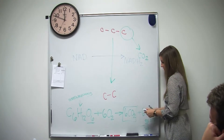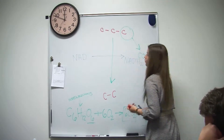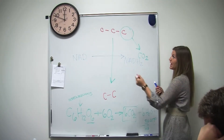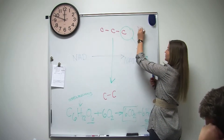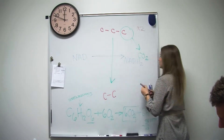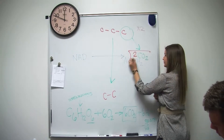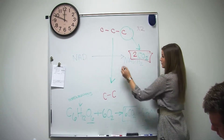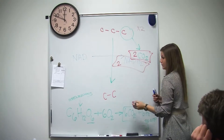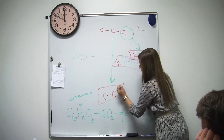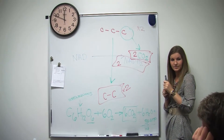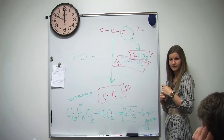So from acetyl-CoA formation, what do we get if we write everything we gain? Remember we had 2 pyruvates, so we multiply everything by 2. We're going to have 2 CO2s and 2 NADH. Does that make sense?